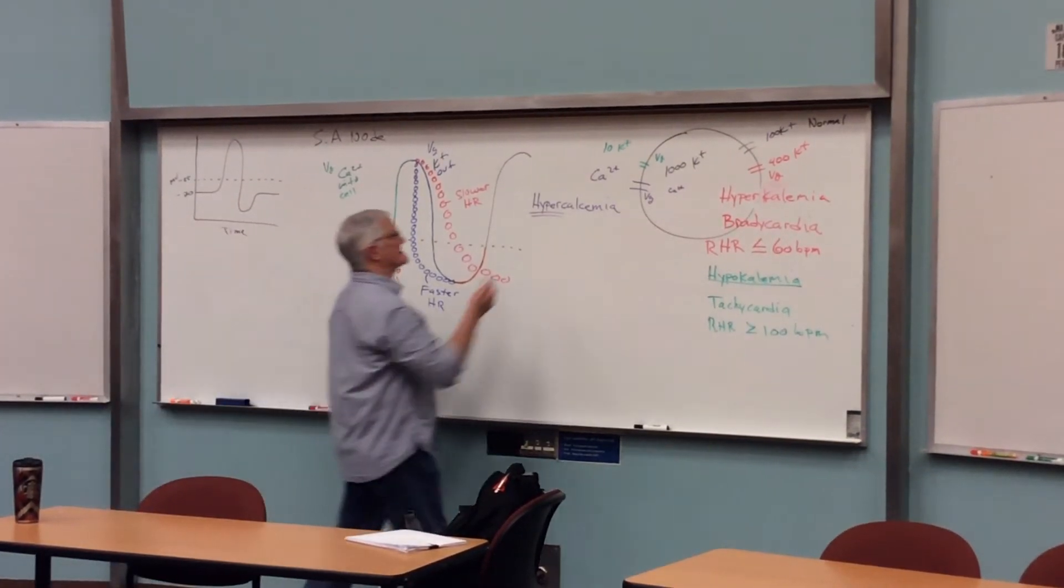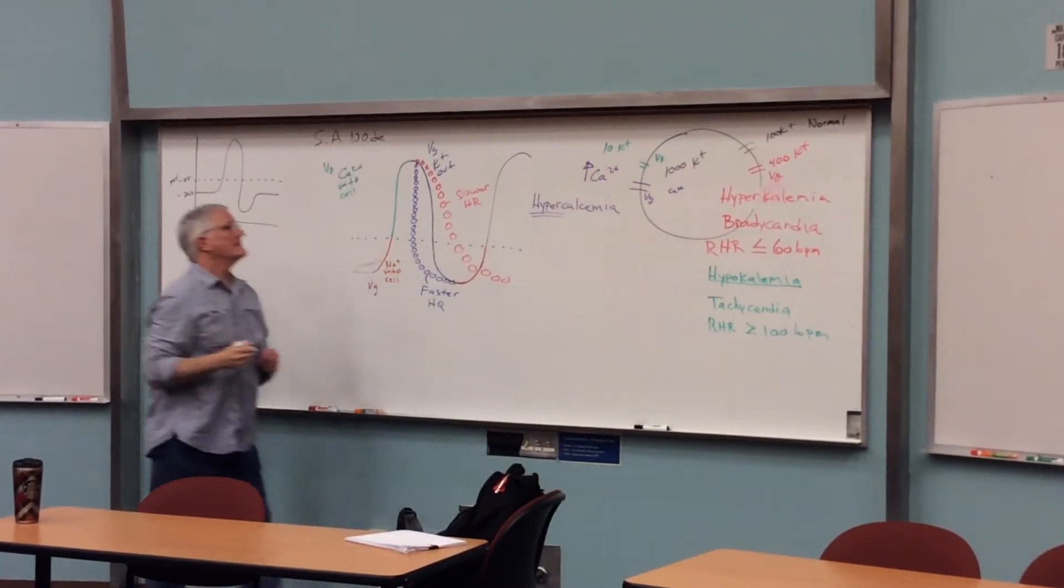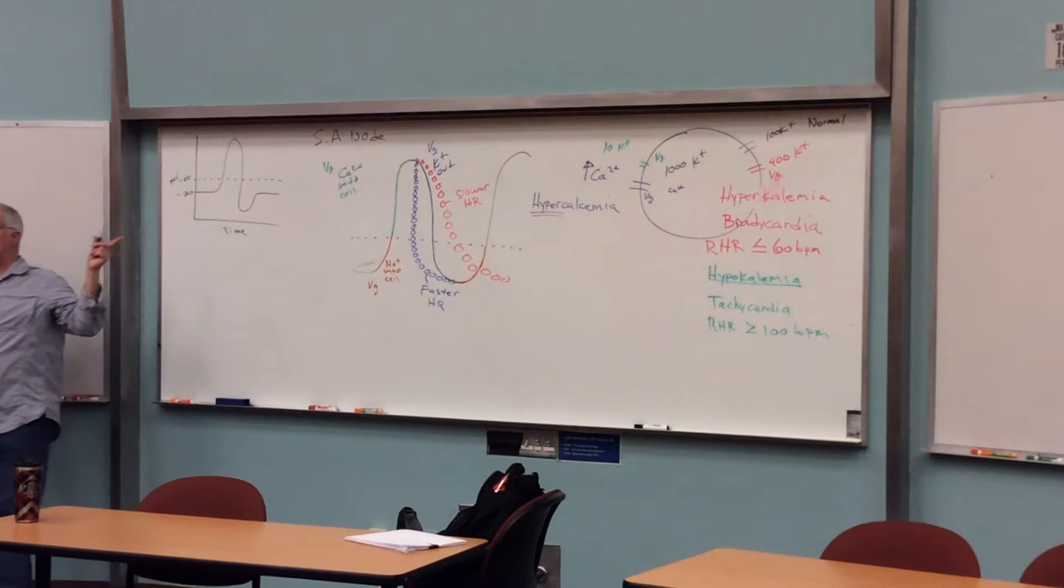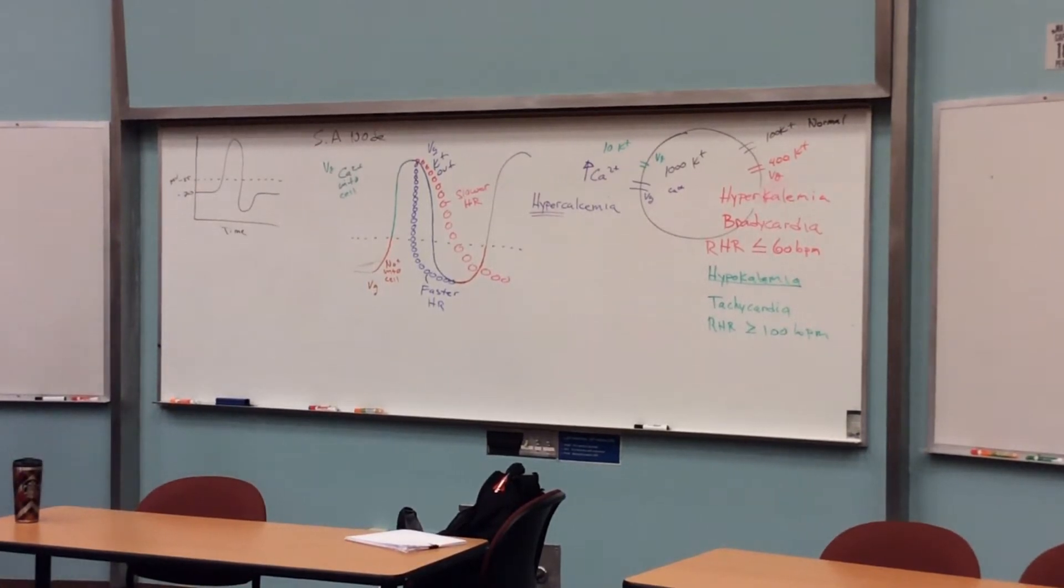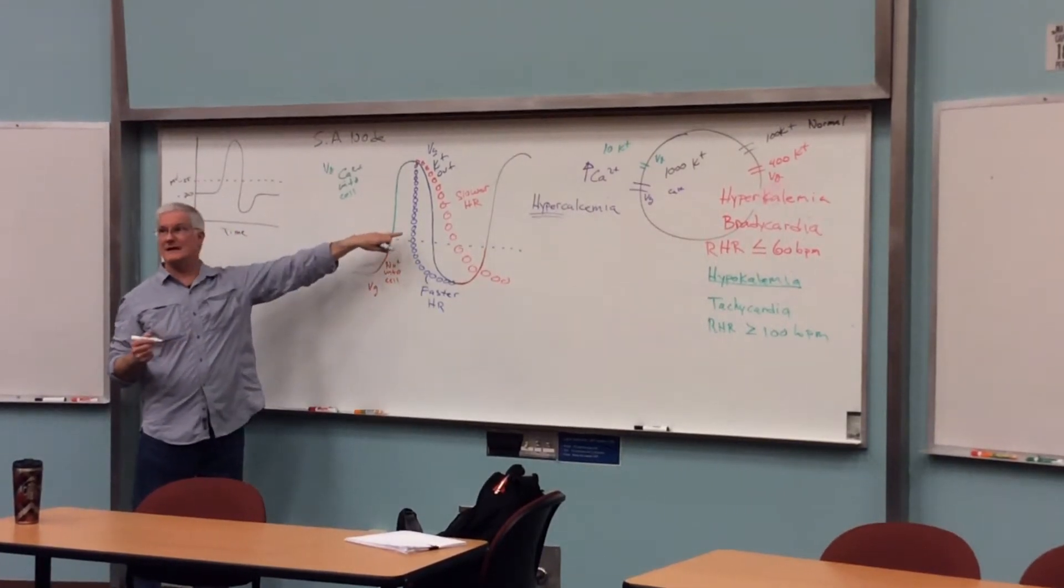Hypercalcemia, which means higher than normal levels of calcium in the extracellular fluid or the interstitial fluid, or in the blood. They all come from the same thing. Now, if you increase this, if you increase the amount of calcium on the outside, what would that do to your action potential in an SA node?